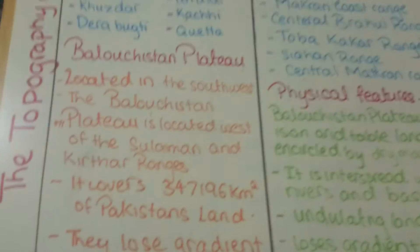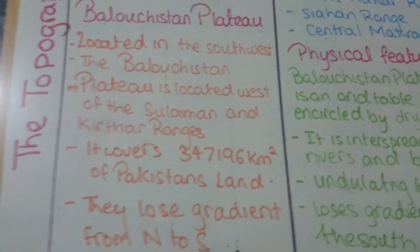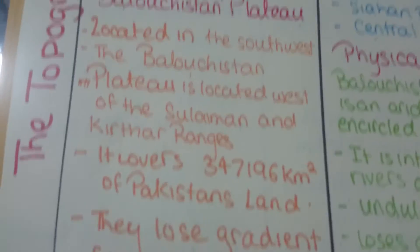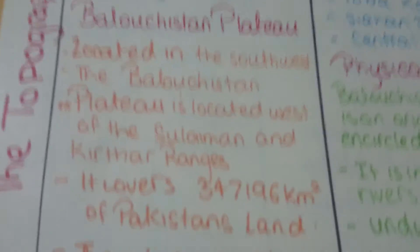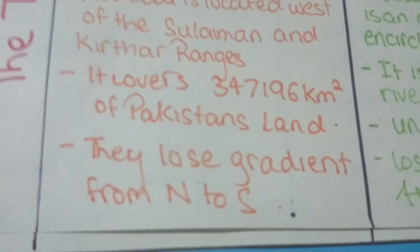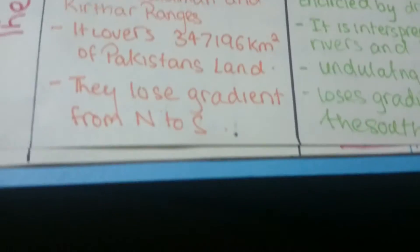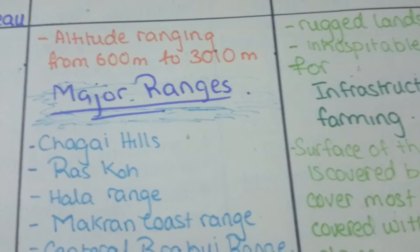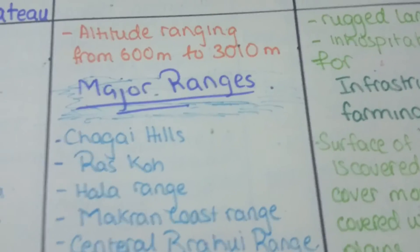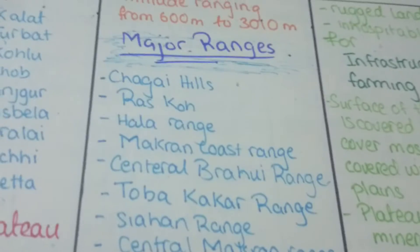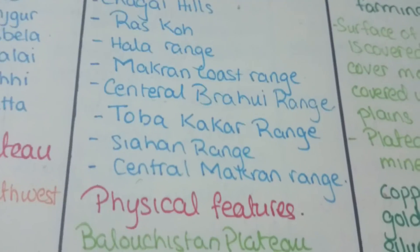The Balochistan Plateau is located in the southwest of Pakistan, west of the Suleiman and Kirthar ranges. It covers three lakh forty-seven thousand one hundred and ninety-six square kilometers of Pakistani land, with a loose gradient from north to south and altitude ranging from 600 meters to 3,010 meters.